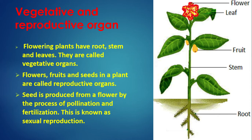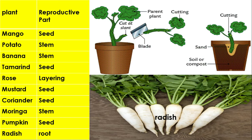Vegetative and reproductive organs: Flowering plants have roots, stem and leaves — these are called vegetative organs. Flowers, fruit and seeds in plants are called reproductive organs. Seed is produced from a flower by the process of pollination and fertilization, which is known as sexual reproduction. Examples: Mango and mustard reproduce through seed; potato, banana and moringa reproduce through stem; radish reproduces through root; rose reproduces through layering.